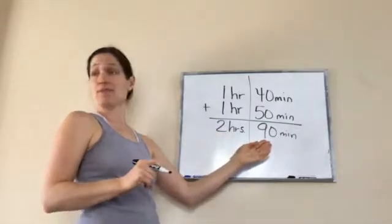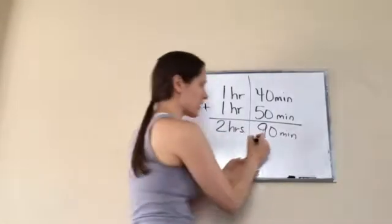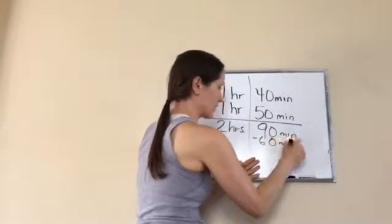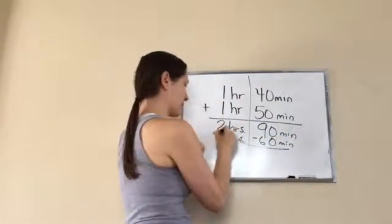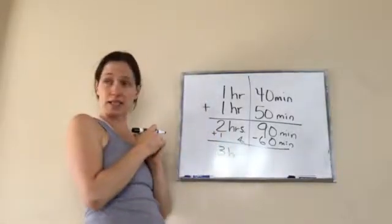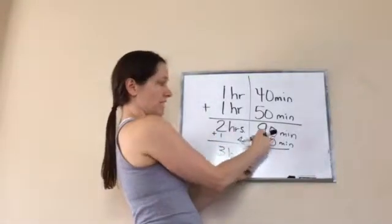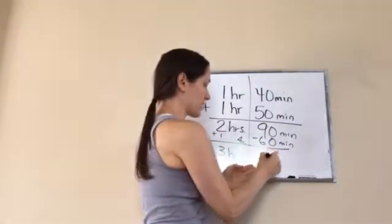Yeah. How many minutes are in an hour? 60. So I'm going to take away 60 minutes and bring it over here to make it give me one more hour. So I have 3 hours. You see what I did? So then 60 minutes from 90 minutes, it leaves us 30.